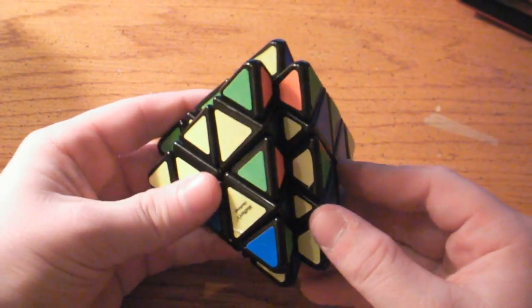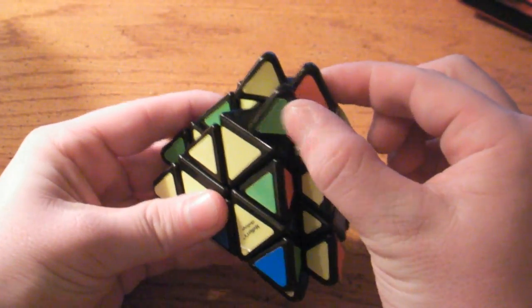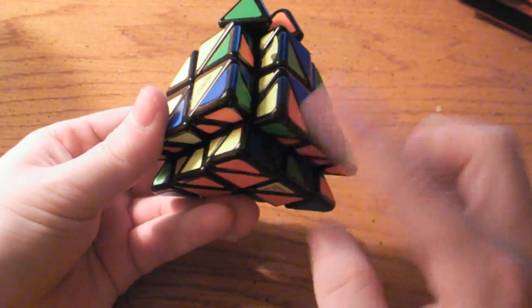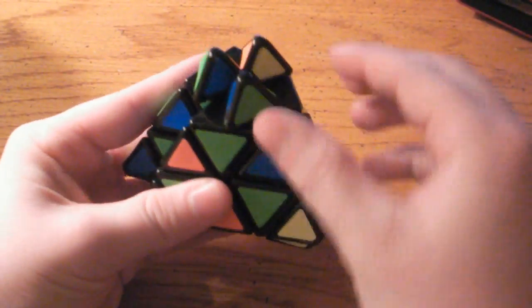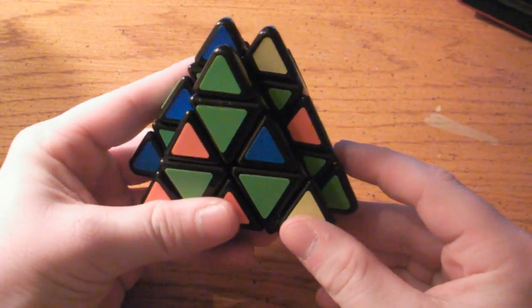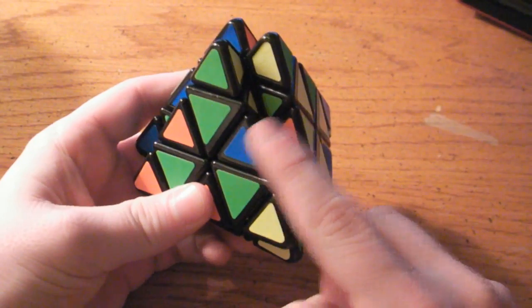What this step is going to be is solving all of these tip sections: these three pieces, these three pieces, these three, and these three. And when we're done with that, we will have everything solved except these edge pieces.